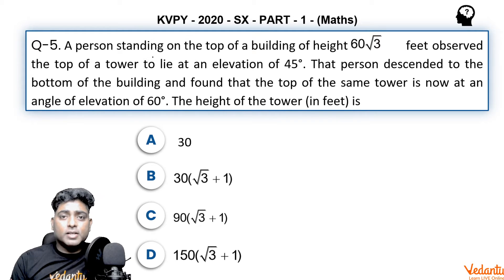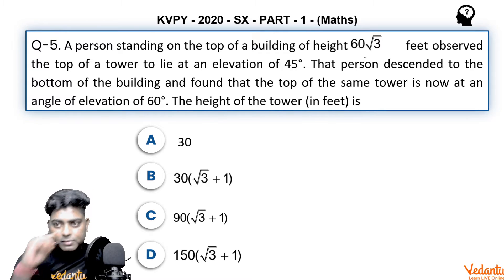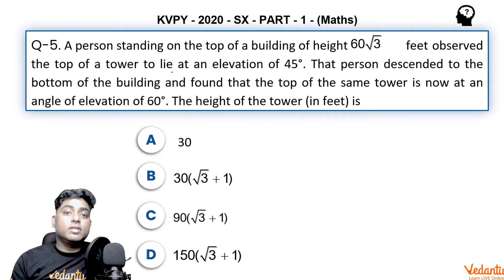This question is based on the topic heights and distances. A person standing on top of a building of height 60√3 feet observed the top of a tower to lie at an elevation of 45 degrees. That person descended to the bottom of the building and found that the top of the same tower is now at an angle of elevation of 60 degrees.